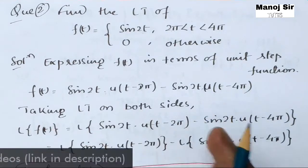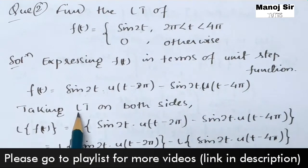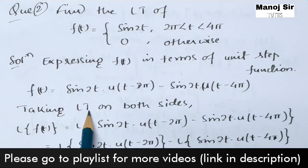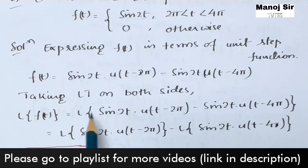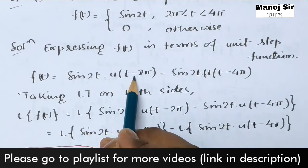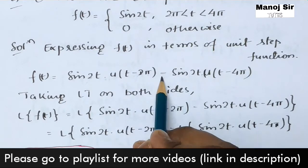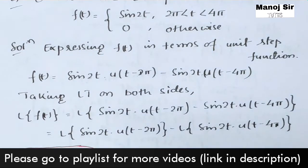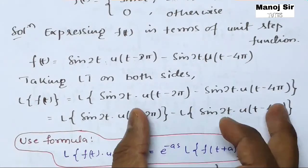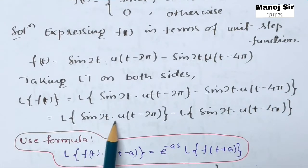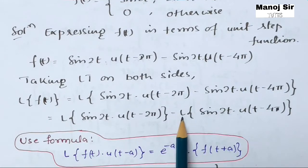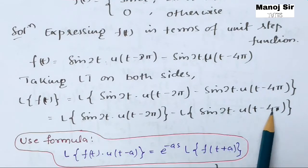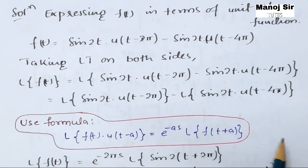After expressing f(t) in terms of the unit step function, we take the Laplace transform on both sides. This gives: L{f(t)} = L{sine(2t) · u(t − 2π)} − L{sine(2t) · u(t − 4π)}. We separate these two terms.